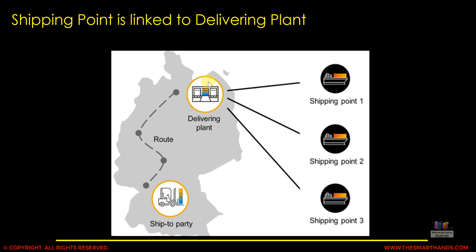In most scenarios this is a one-to-one link, meaning the shipping point and delivering plant are the same. For example, in our system we created a delivering plant SDS4 and the same is the shipping point SDS4. But in some large companies there can be more than one shipping point from the same delivering plant. We can also customize that, which I am going to show you in this video.